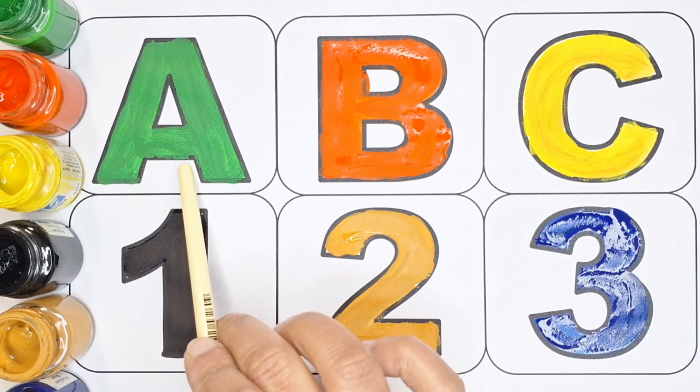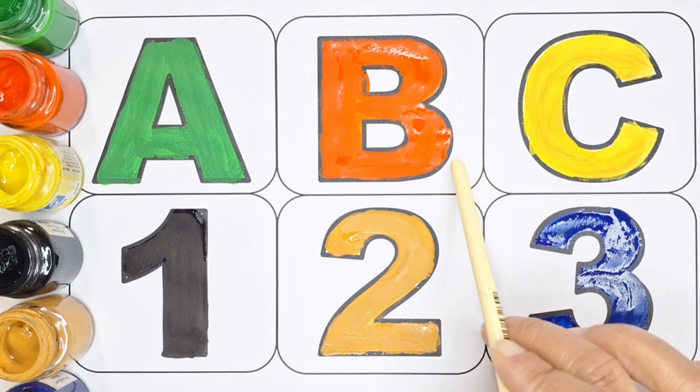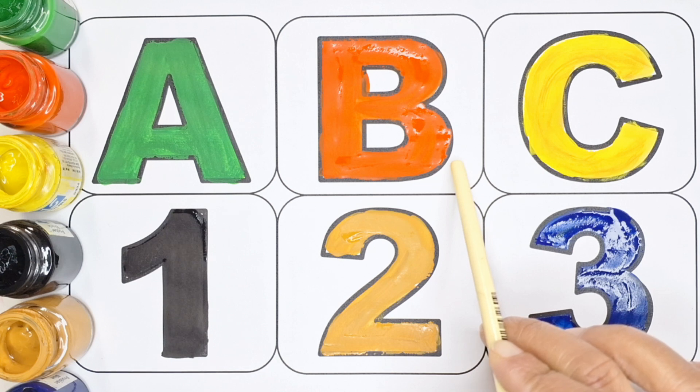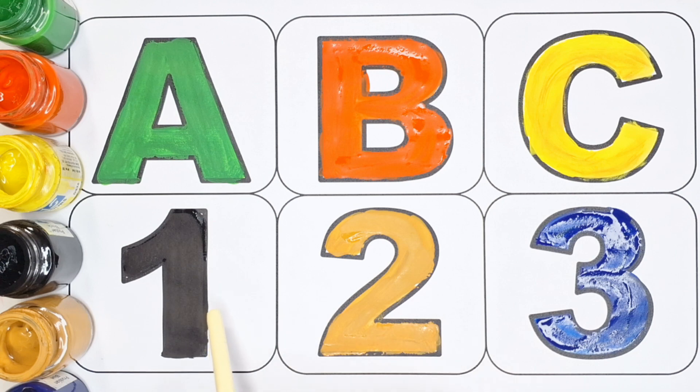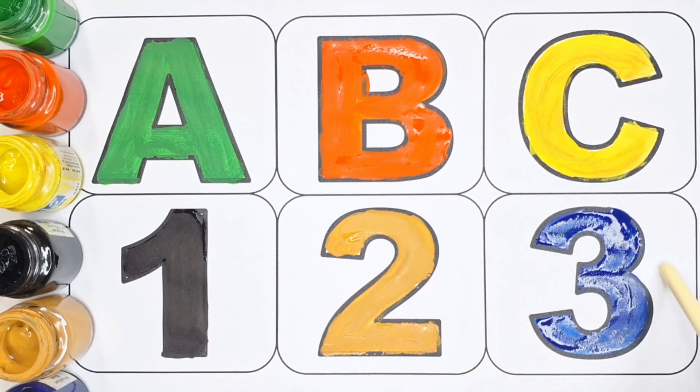This is letter A. A for ambulance or A for aeroplane. This is letter B. B for bicycle or B for bus. This is letter C. C for computer or C for cloud. This is number one. This is number two. This is number three.